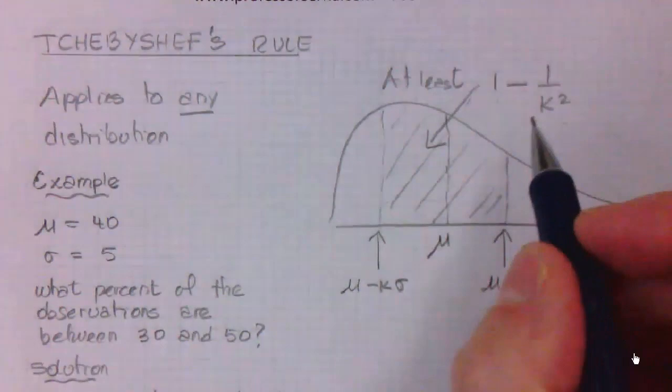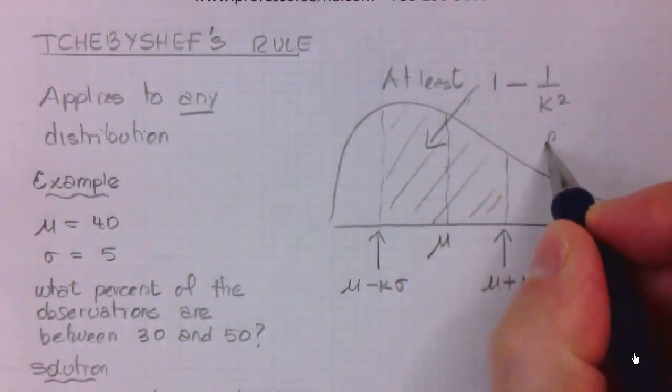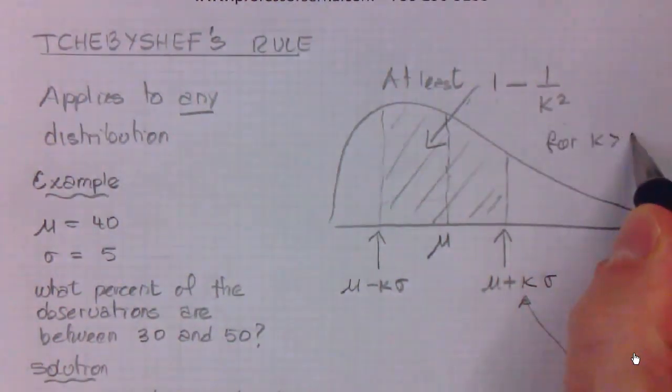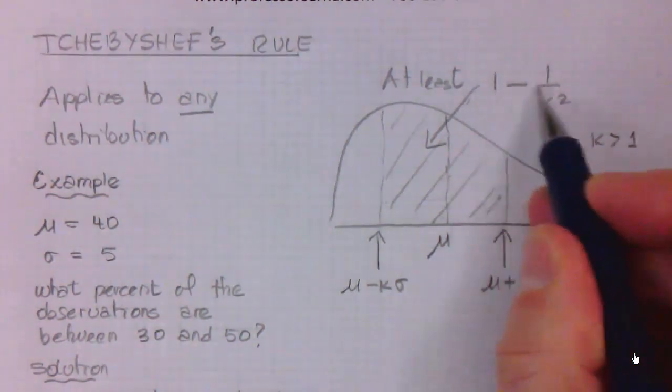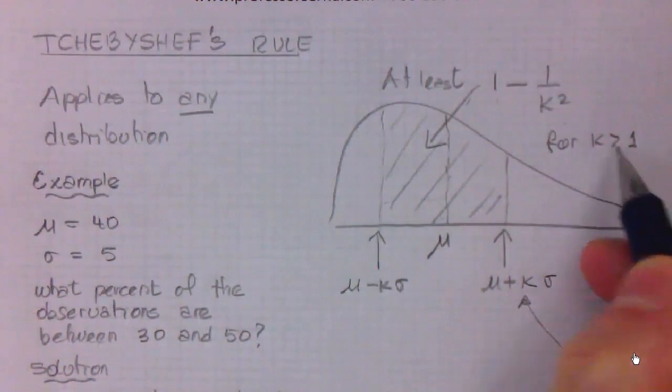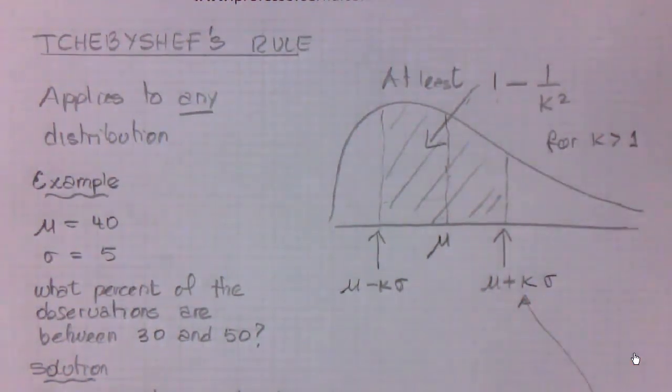We should note that Chebyshev's rule is applicable for values of k greater than 1. If k equals 1, you would get 0, and if k is less than 1, you would get a negative number, which doesn't make sense.